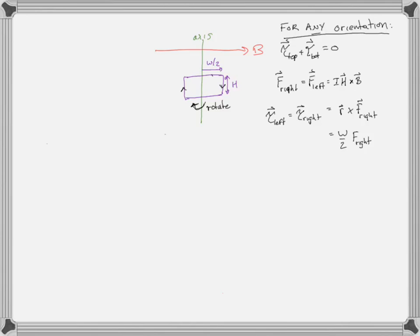The force on the left and right is ILcrossB, or IHcrossB where L equals H. The torque on the left equals the torque on the right, which equals R cross either one of those forces. R is always perpendicular to the force because the force is always going to be perpendicular to the plane made up of the H and B vectors — it's always into or out of the page from the orientation we're looking at.